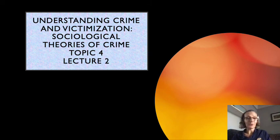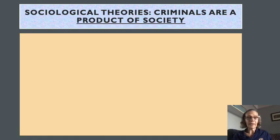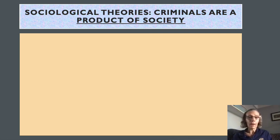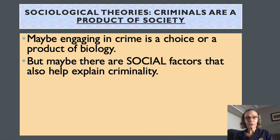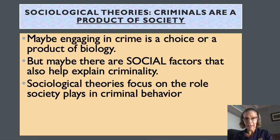Hello and welcome to topic four lecture two. In this lecture we're going to take a look at the sociological theories of crime. From their viewpoint, criminals are a product of society — society produces criminals, and people are not born naturally criminal. Just as rational choice theory dovetails with the crime control perspective, sociological theories dovetail nicely with the rehabilitation perspective. Social factors and societal factors help us understand criminality, and sociological theories focus on the role that society plays in criminal behavior.